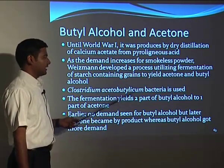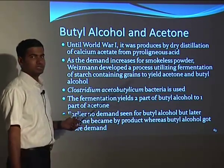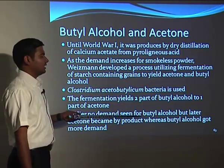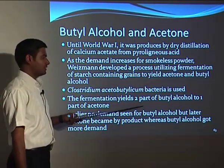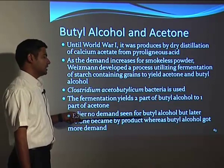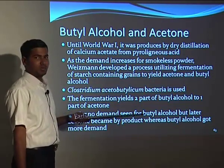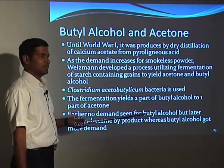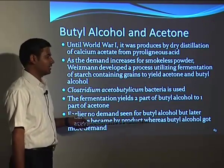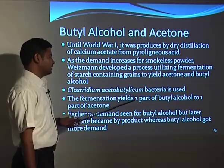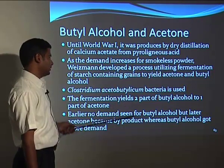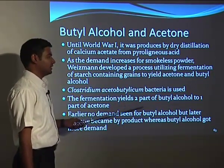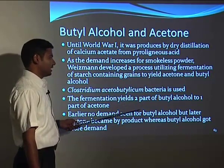Earlier, acetone was the major product used for smokeless powder and butyl alcohol had no value. Nowadays, butyl alcohol has more value than acetone, so acetone — which was the major product earlier — has now become the byproduct. The fermentation gives two parts of butyl alcohol to one part of acetone, and efforts were made to increase the butyl alcohol part and reduce the acetone part.